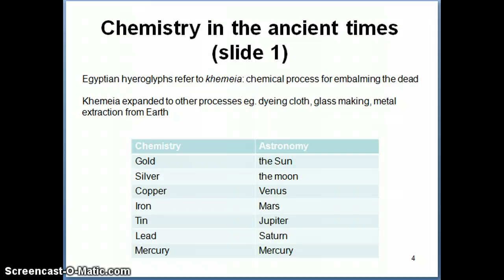In the ancient times, very long time ago, in the time of the Egyptian pharaohs, the first people to kind of talk about chemistry at that time, there's some records from Egyptian hieroglyphs that there's a process called chemia, which is basically referring to the process of embalming the dead. So if you remember that we have these mummies from Egyptian times, the whole process to be able to make sure that the dead is preserved is referred to as chemia.